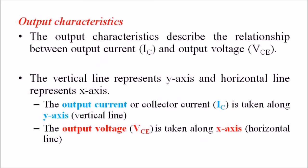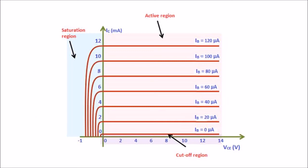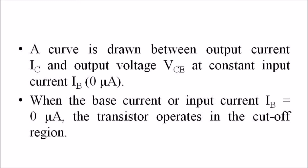Now, the output characteristic describes the relationship between the output current and the output voltage VCE. The collector current IC is represented on the Y-axis and the output voltage VCE on the X-axis. To determine the output characteristic, the base current IB is kept constant at 0 microamperes and the output voltage VCE is increased from 0V to different voltage levels. For each level, the corresponding output current is recorded and a curve is drawn between IC and VCE at IB equal to 0 microamperes. When IB is at 0 microamperes, the transistor operates in the cutoff region, where both junctions are reverse biased.